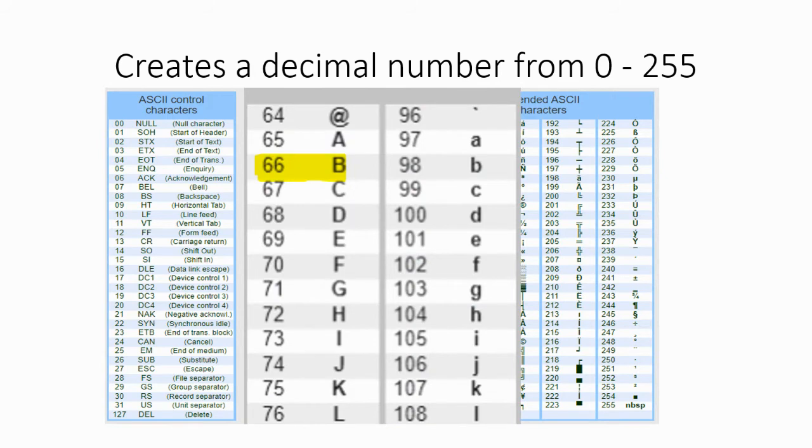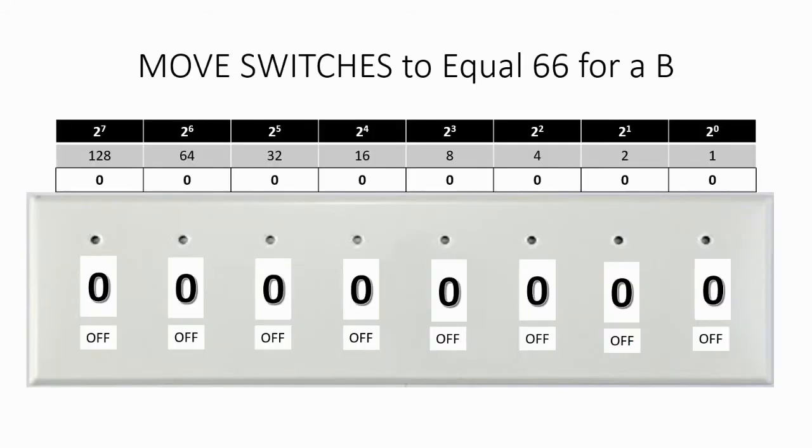To get the character B, again, we need the value of 66. So let's watch. When we start, we'll start at the very left-hand side on our first switch. We're trying to get a value of 66.